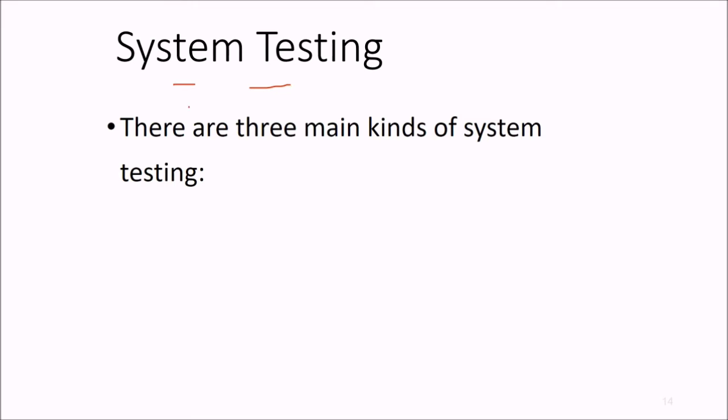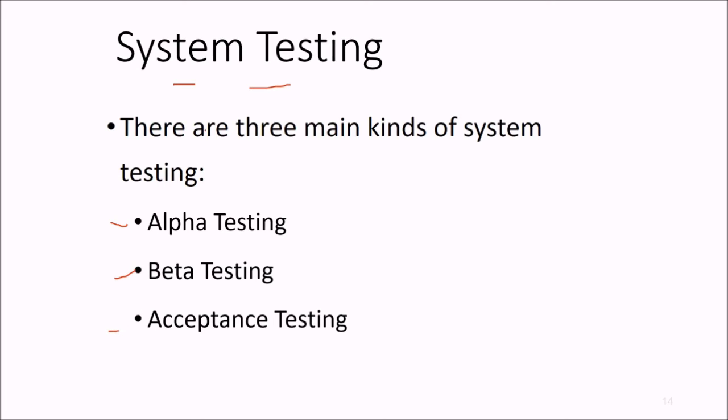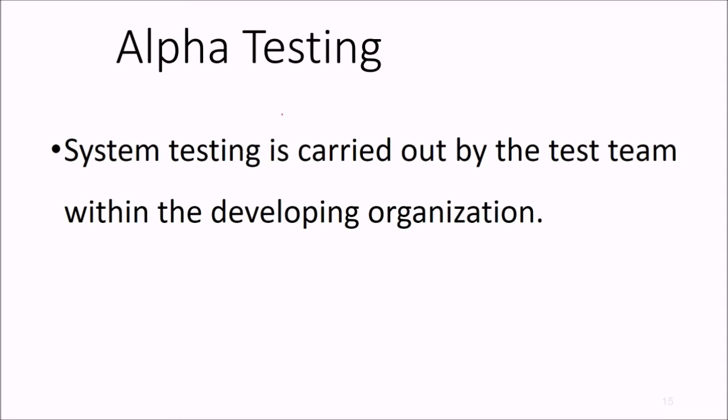First is alpha, second is beta, and third is your acceptance testing. These are the three categories of system testing. Alpha testing is the system testing carried out by the testing within the organization, the developing organization. The testing would be from the organization only which has developed the software.